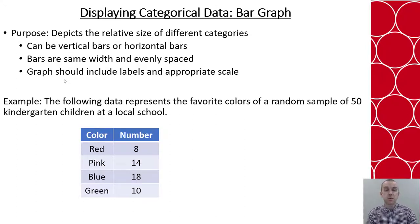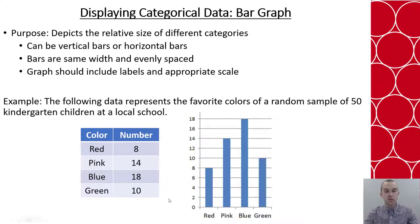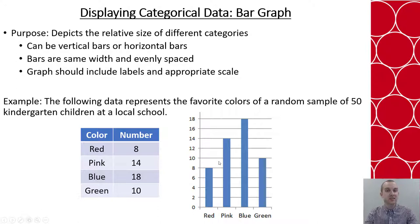Let's say we have an example where 50 kindergarten children were asked their favorite colors. In our frequency table we have red, pink, blue, and green with their numbers. To turn that into a bar chart, we put our labels of red, pink, blue, and green at the bottom. We have a vertical axis with numbers to represent the data. In this case we skip every two, and it helps to have values line up with a major or minor axis whenever possible. If that's not possible, the next best thing is to write the value above the bar so it can be stated accurately.